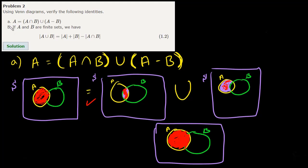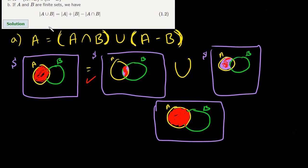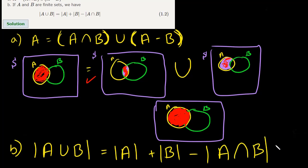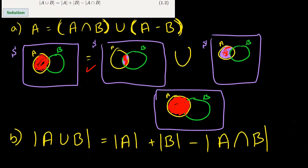All right, for part B, what do they ask us to do? If A and B are finite sets, we have, this little bar here means basically we're counting the number of elements in that finite set, or it's the size of the set. So what they want us to show is that A union B, the number of elements in A union B equals the number of elements in A plus the number of elements in B minus A intersection B.